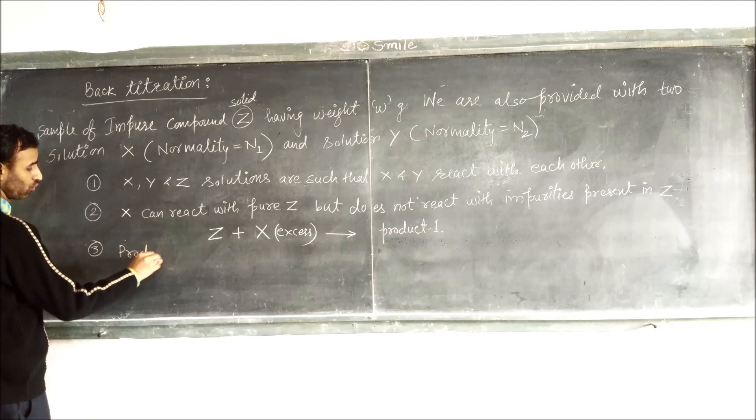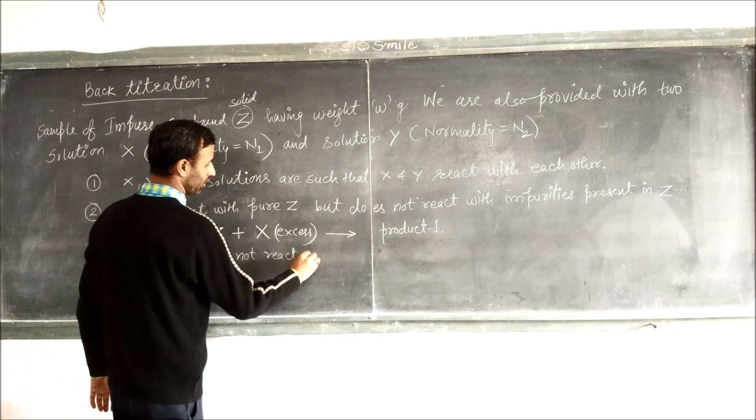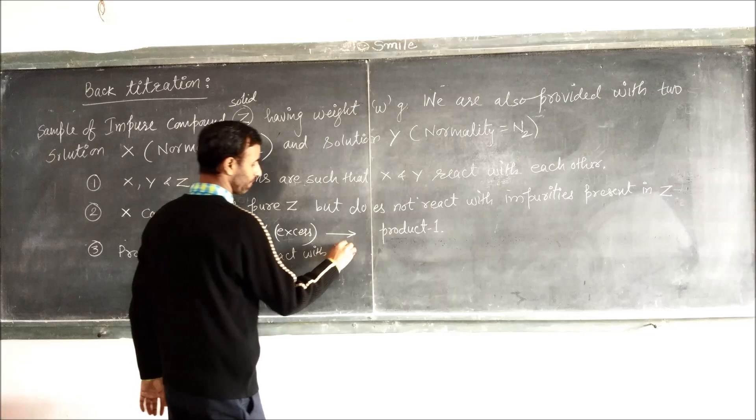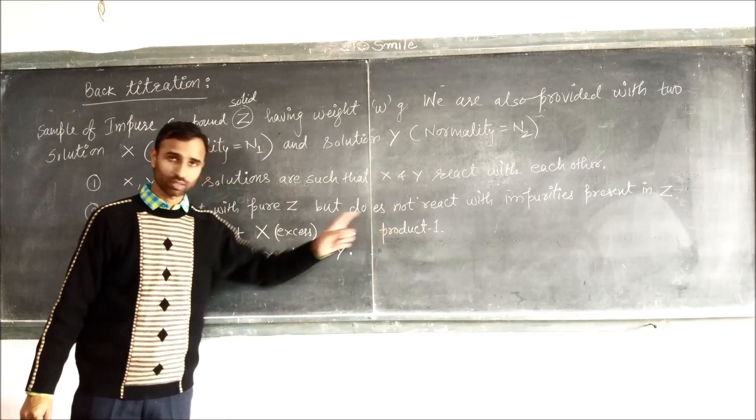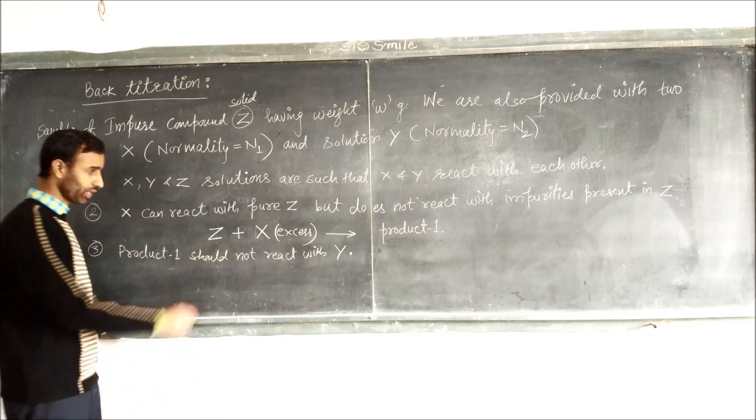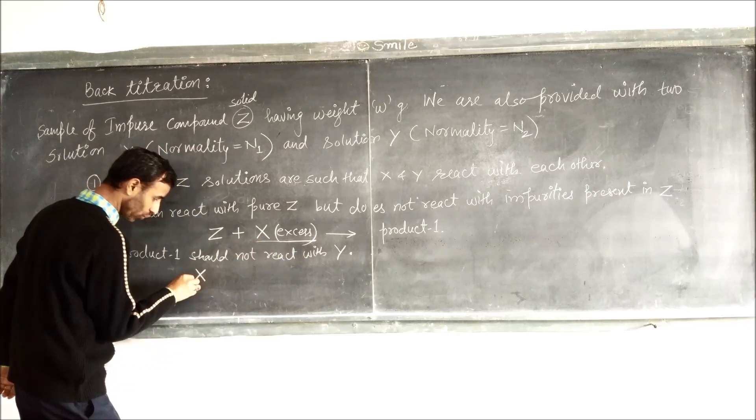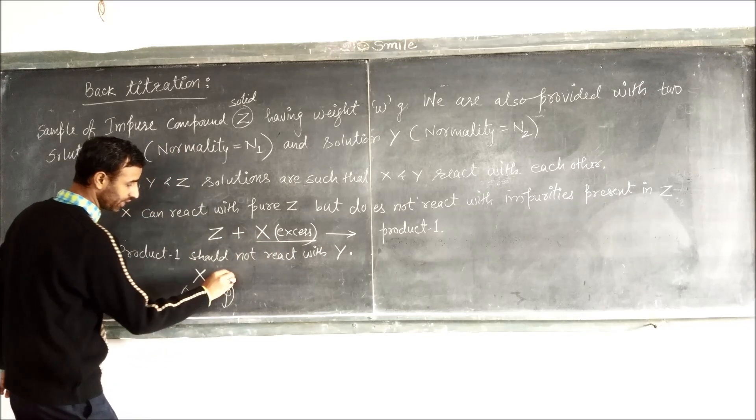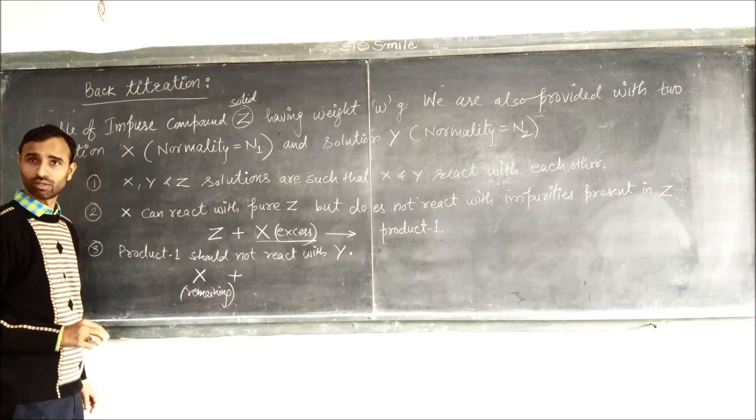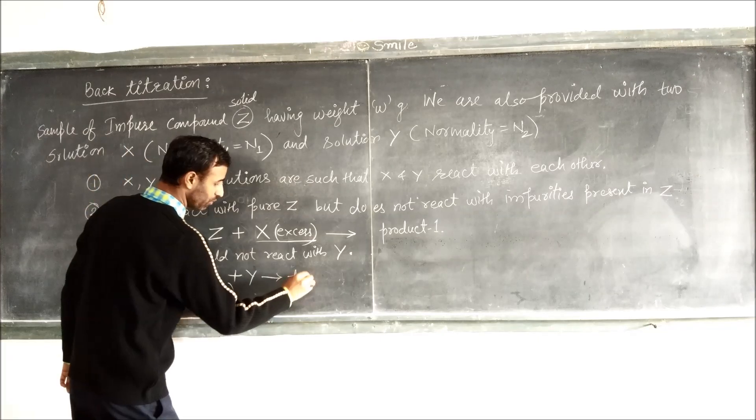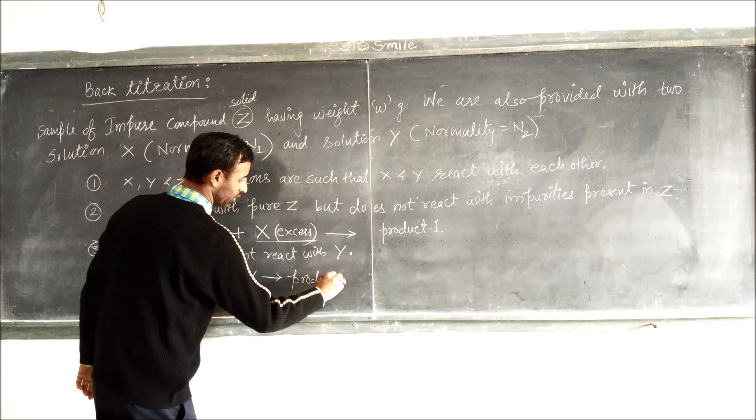Now the third condition applies: product 1 should not react with Y. Now what happens, this is X in excess. Now remaining X is titrated against Y to give product 2.